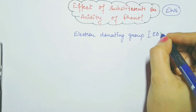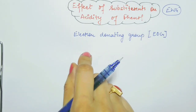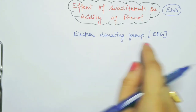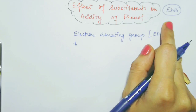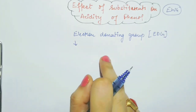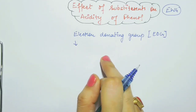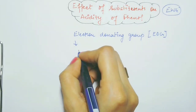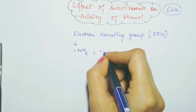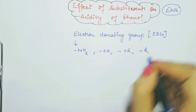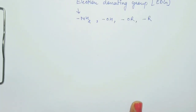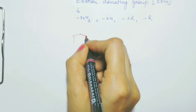Electron donating groups — how this group will affect the acidity of phenol. As we know, electron donating groups are the groups which release or provide electrons. Here we are taking some examples such as amino, hydroxy, alkoxy, and alkyl. These are the electron donating groups.